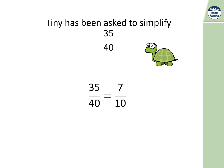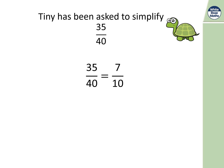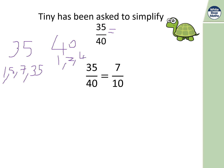Tina has been asked to simplify 35/40. Because both numbers end in five or zero, I'd mostly divide by five. Factors of 35 are one, five, seven, and 35 — the only four factors. Factors of 40 are one, two, four, five, eight, ten, twenty, and forty. Those are the only numbers that go into 40 cleanly.